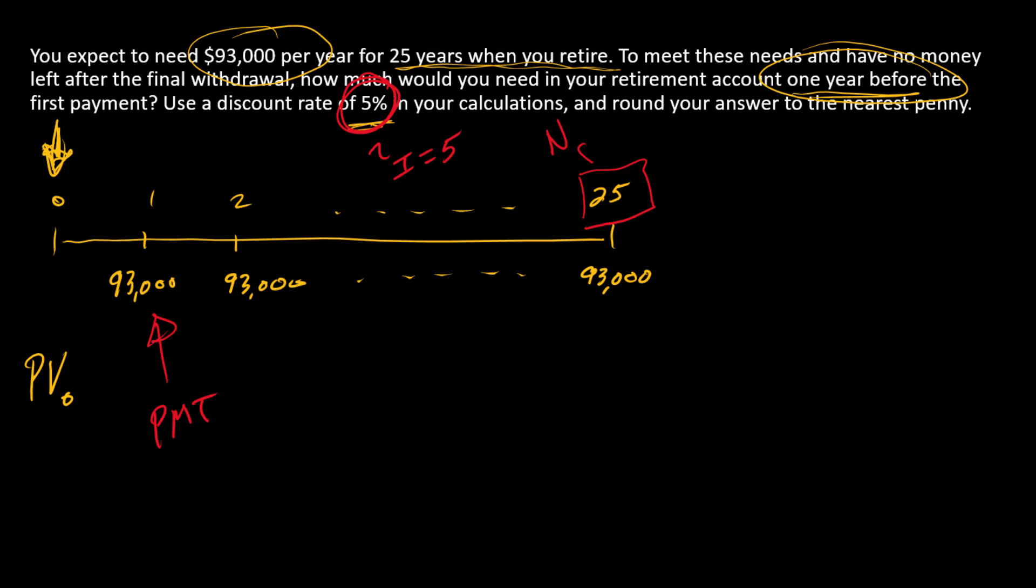What about FV? FV is going to be entered as zero because there is nothing else happening in time 25 other than the payment, which is already covered by the payment key. So we're going to solve for the PV.